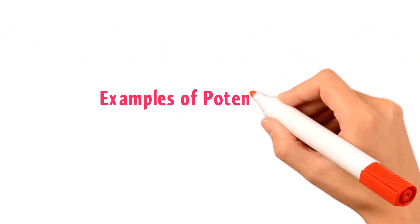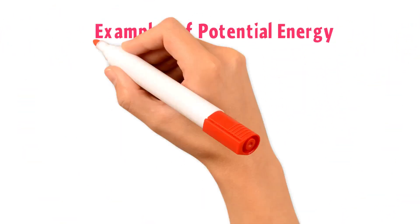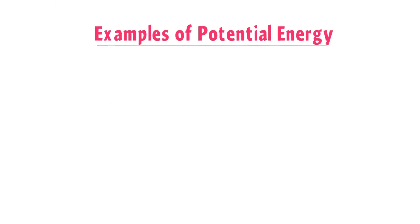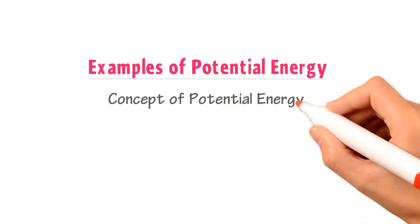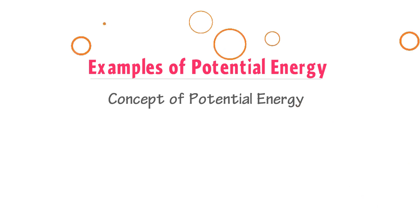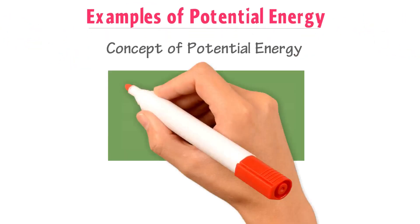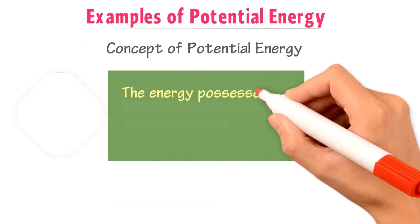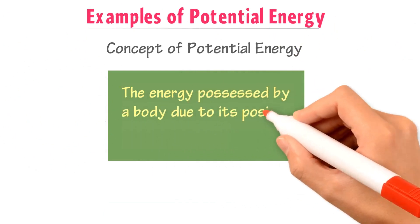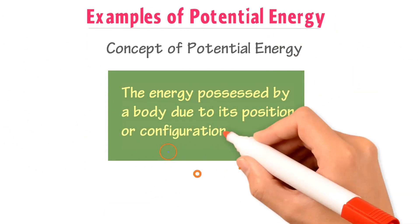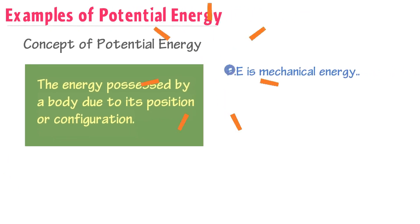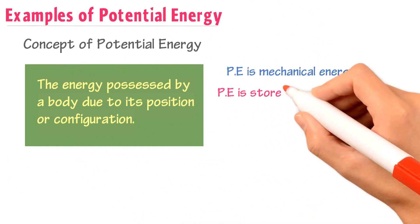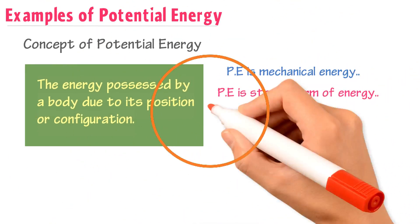The Different Examples of Potential Energy. Before giving you the examples of Potential Energy, let me explain the concept of Potential Energy. We define Potential Energy as the energy possessed by a body due to its position or configuration. Potential Energy is Mechanical Energy, or we can say that Potential Energy is the stored form of energy.